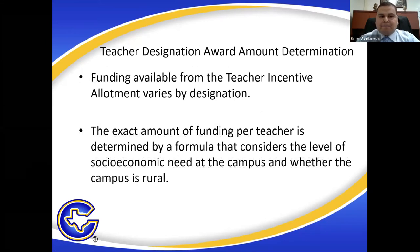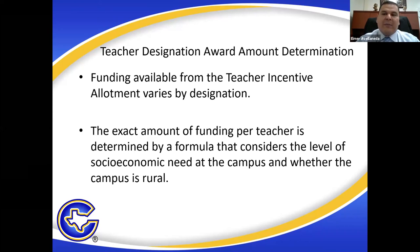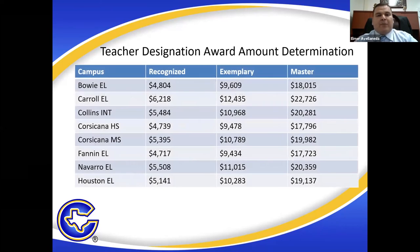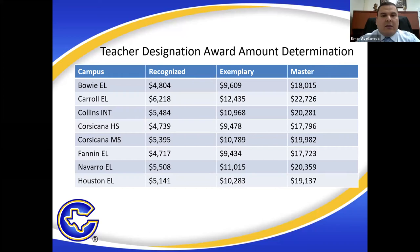The award amounts vary. Recognized gets a different amount, exemplary gets a different amount, and master gets a different amount. The amount of funding per teacher is determined by the campus — not your classroom, but the campus socioeconomic need and whether that campus is rural or not. Let's take a couple of minutes for leaders and teachers to look at, by campus, the designations of recognized, exemplary, and master, and how much extra teachers at one of those campuses who earn that designation will receive. Let's take about two minutes to review that.